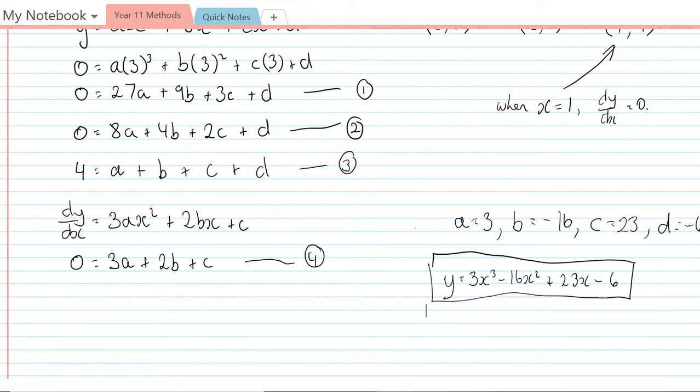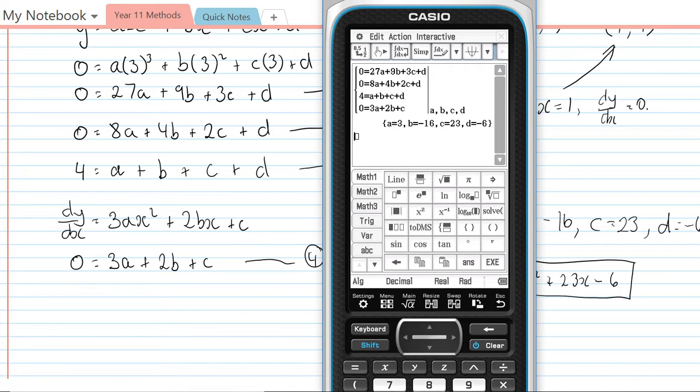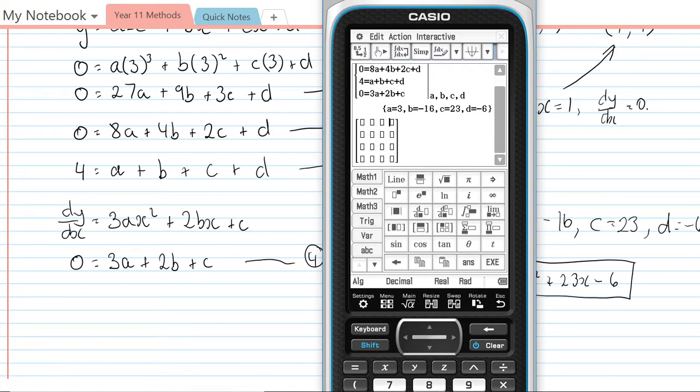An alternative approach here would be to use the matrices method. To do that I'm going to go into math 2, and I'm going to set up a 4 by 4 matrix for the coefficient matrix. In that I need to have 27, 9, 3, and 1; I need to have 8, 4, 2, and 1; I need to have 1, 1, 1, and 1.